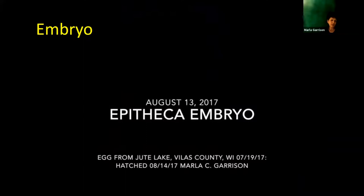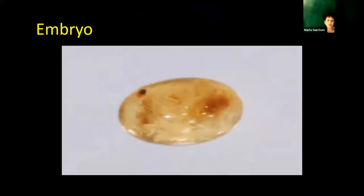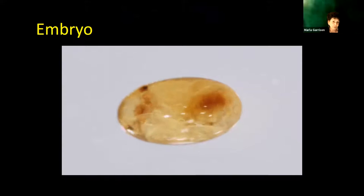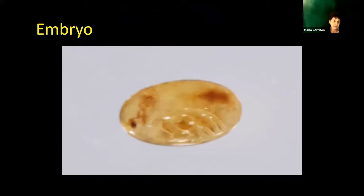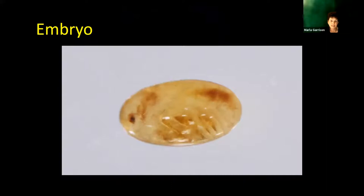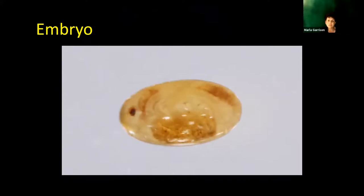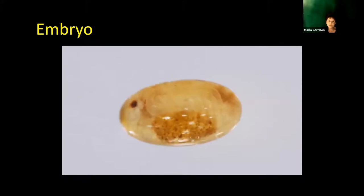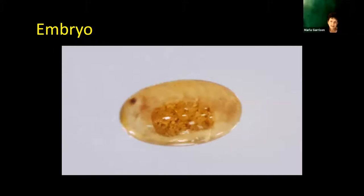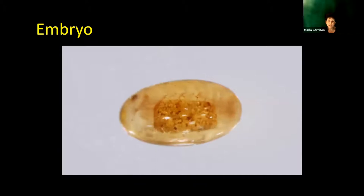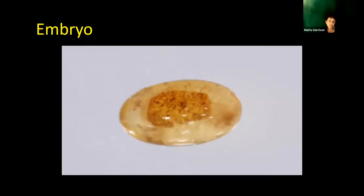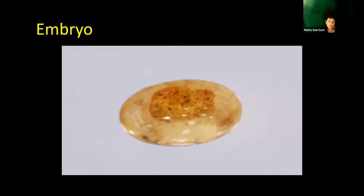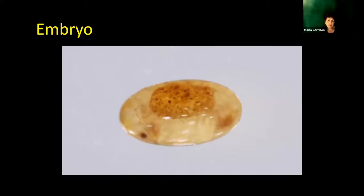This video shows an Epitheca embryo just a day or so before hatching — you can see the antennae, eyespots, and legs as it twists and turns. Notice not just the structures of the nymph itself, but that orangish-yellow yolk sac, which is eventually incorporated into the midgut where it supplies energy for the first few hours to few days after emergence, until the nymph begins to successfully capture its own prey.